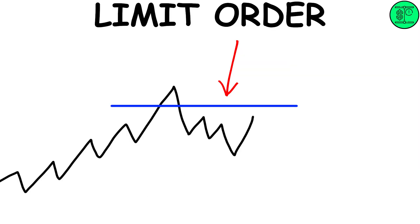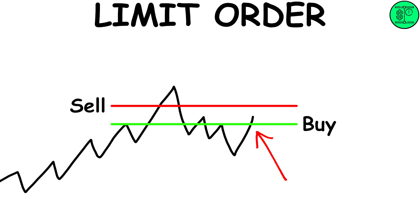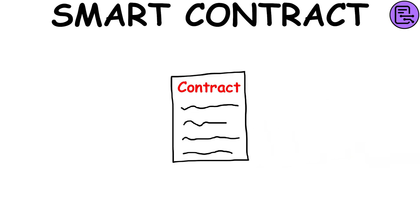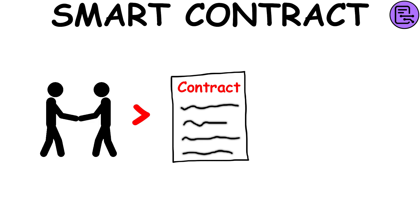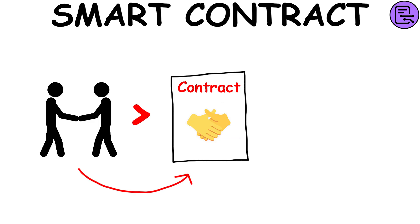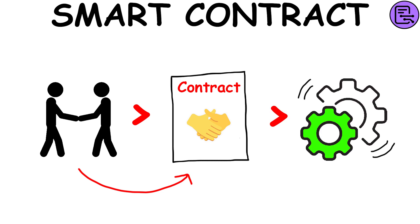Limit order: it is an order placed on an exchange to buy or sell an asset with a restriction on the maximum price to be paid with a buy limit, or the minimum price to be received with a sell limit. Smart contract: it is a self-executing contract with the terms of contract between buyer and seller written directly in lines of code. When the contract detects that the terms have been respected, it automatically executes the transaction.